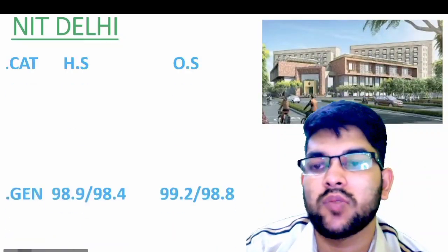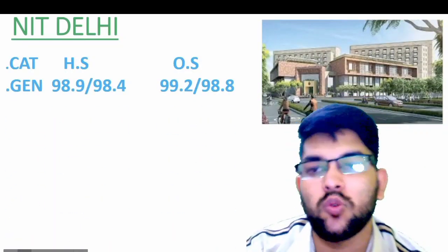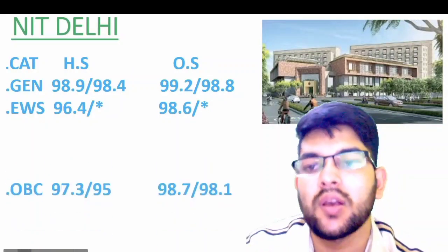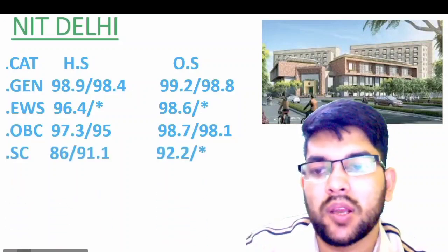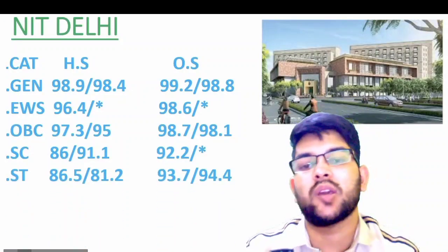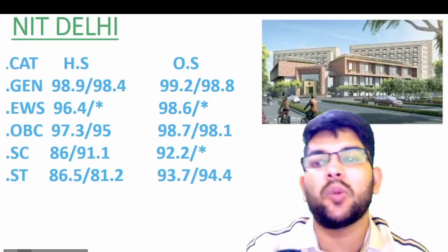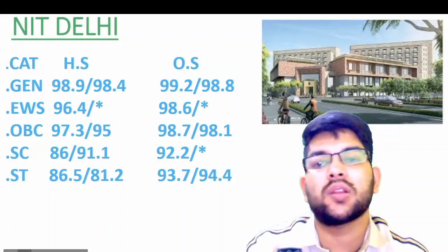The last NIT in this video is NIT Delhi. Here is the information: for General home state 98.9, other state 99.2. For EWS: 96.4 and 98.6. For OBC: 97.3 and 98.7. For SC: 86 and 92.2. For ST: 86.5 and 93.7. This is all about the NIT Delhi cutoff — for male home state and other state; for female you can check after the slash.